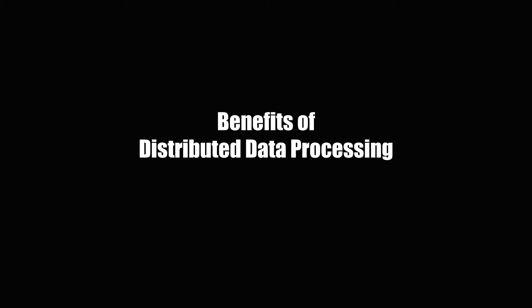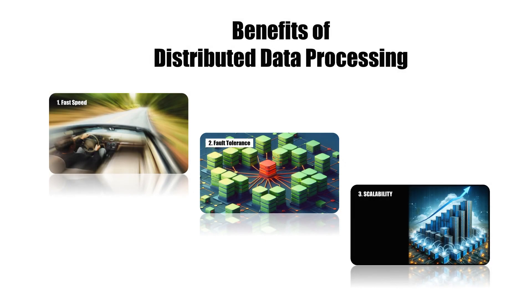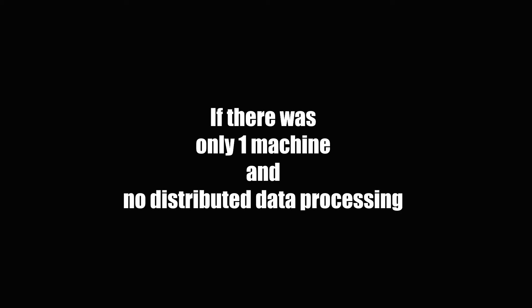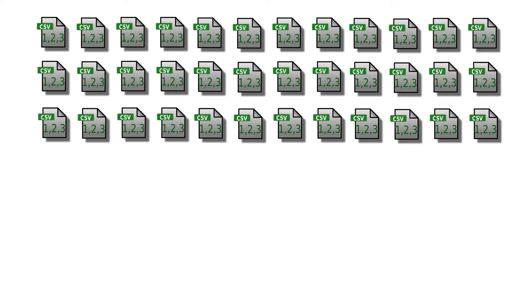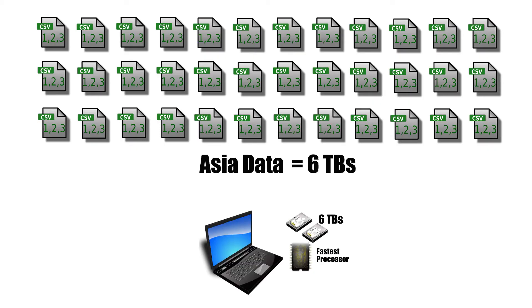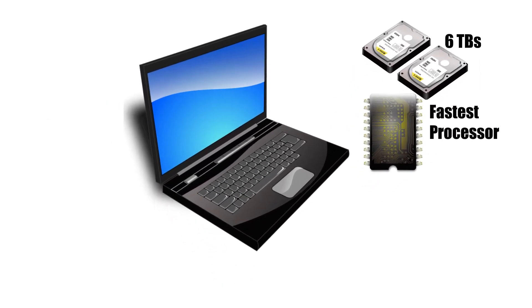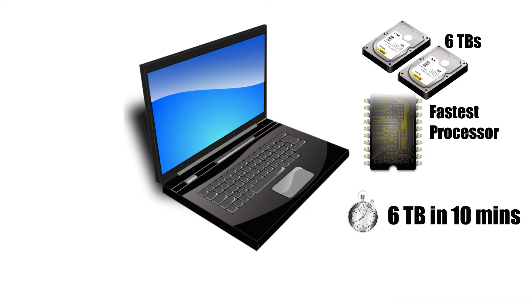Now let's look at the benefits of distributed data processing. The first benefit is fast speed. Imagine a world where there was just one machine and distributed data processing never existed. In our scenario of finding the top five richest Asians, the data size is six terabytes and we have just one machine. We could extend the hard disk to six terabytes, but the fastest processor has a record of processing only one terabyte in 10 minutes — it cannot process six terabytes in 10 minutes.